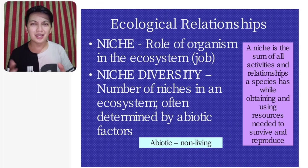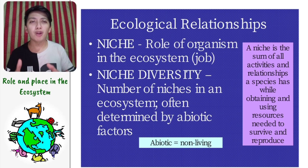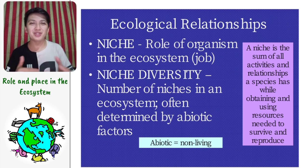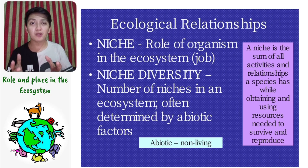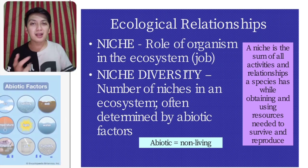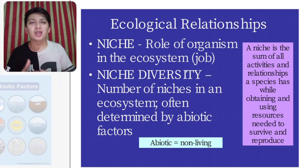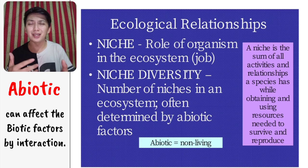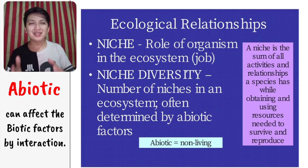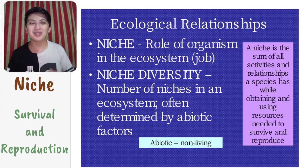Next, we have niche — the role of one organism in the ecosystem, or we can consider it their job. And niche diversity is the number of niches in an ecosystem, often determined by abiotic factors. Abiotic factors are the non-living things such as water, sunlight, rocks, soil, and humidity. A niche is the sum of all activities and relationships a species has while obtaining and using resources needed to survive and reproduce.